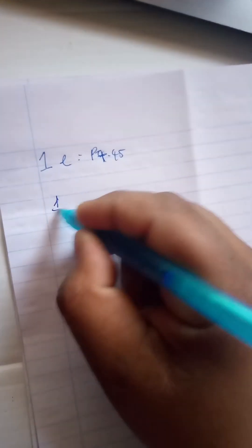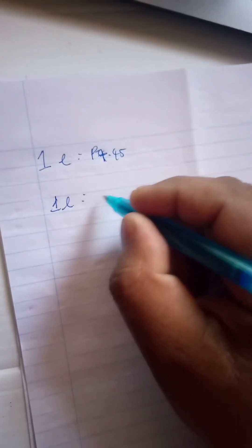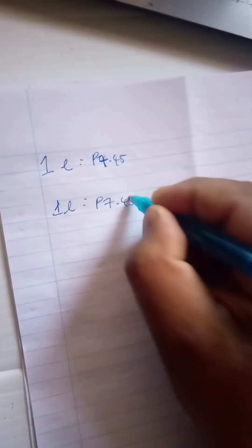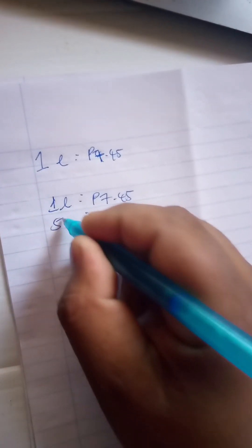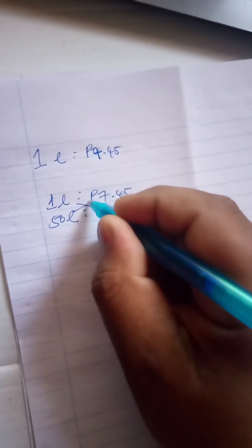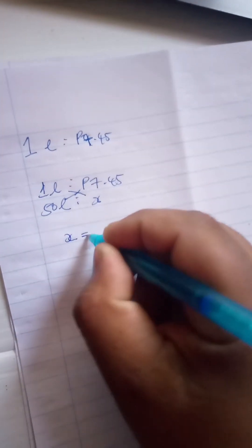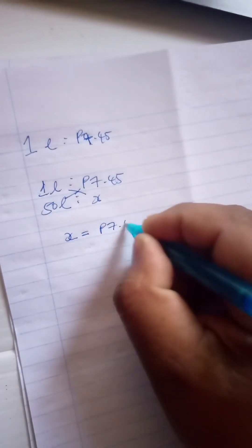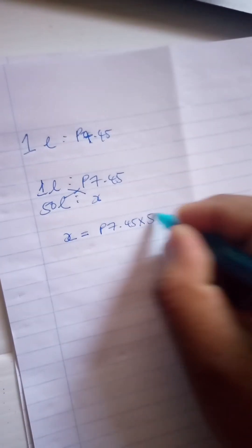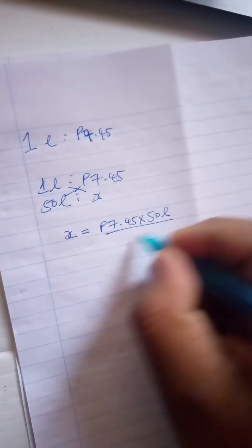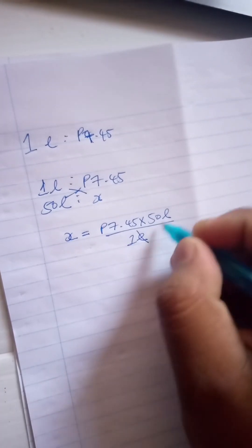All you have to do is one liter is to 7.45, so how much is 50 liters. So all you have to do is cross multiply and find x. So it's gonna be 7.45 times 50 liters over one liter, so the liter is gonna cancel each other.